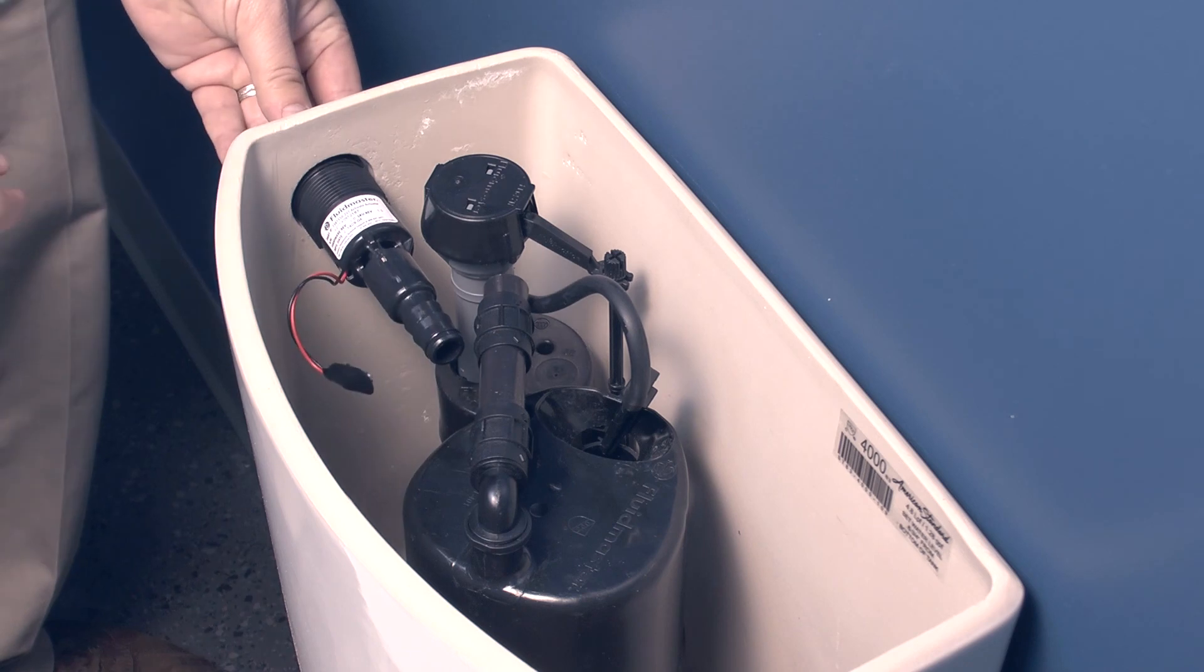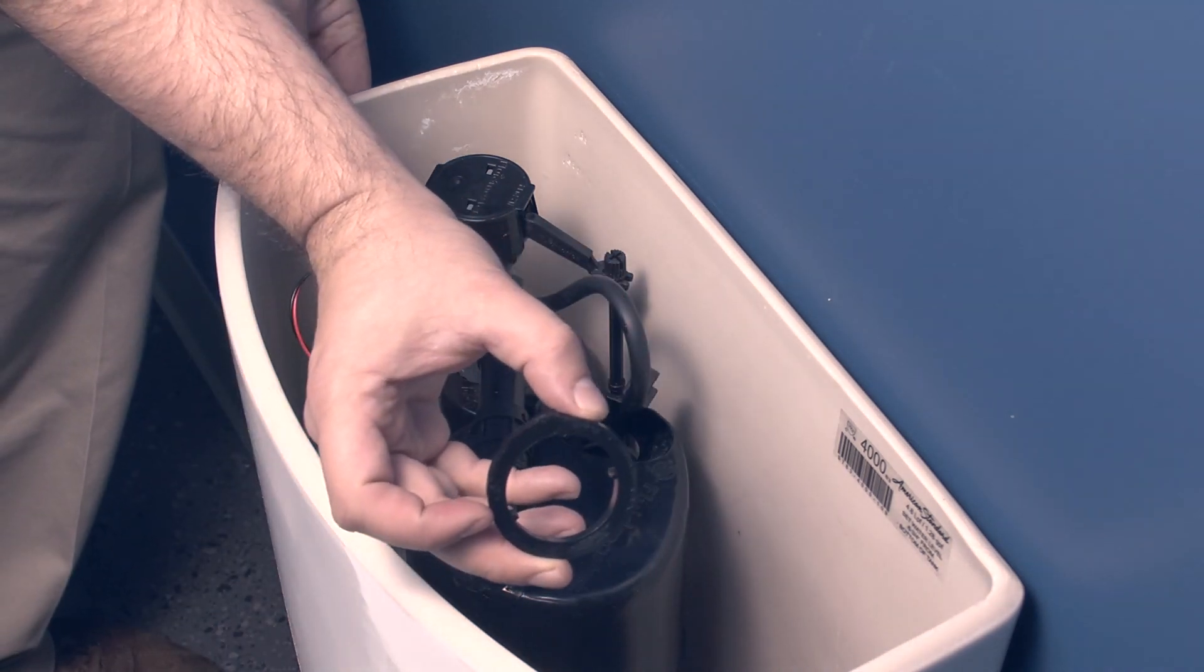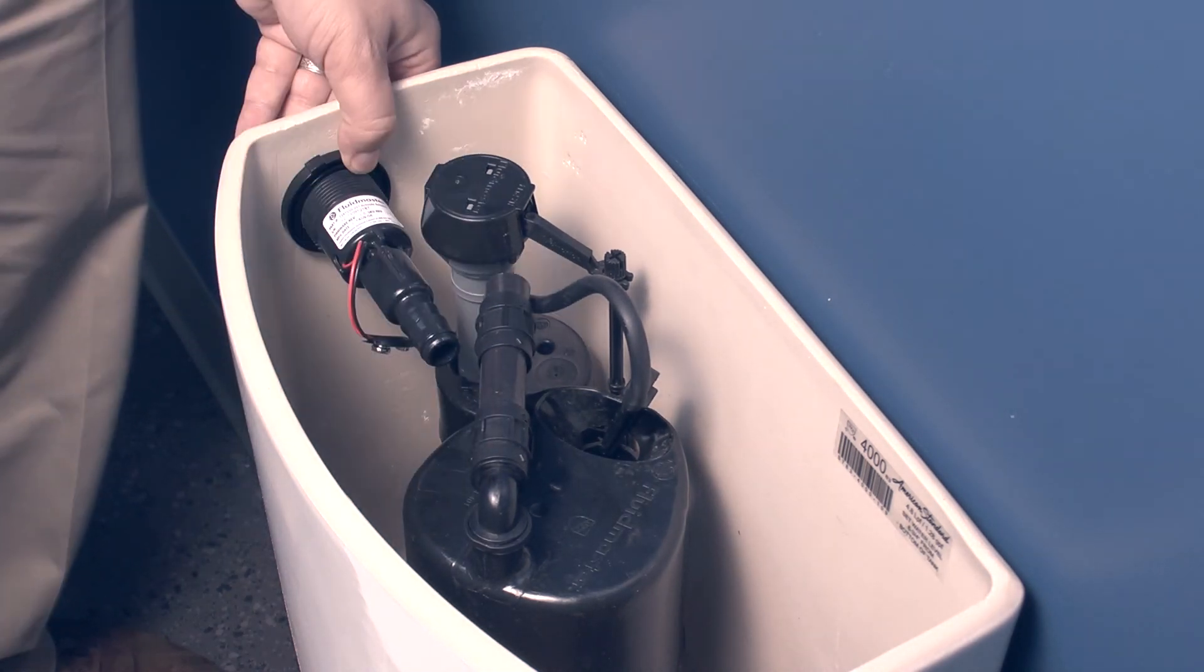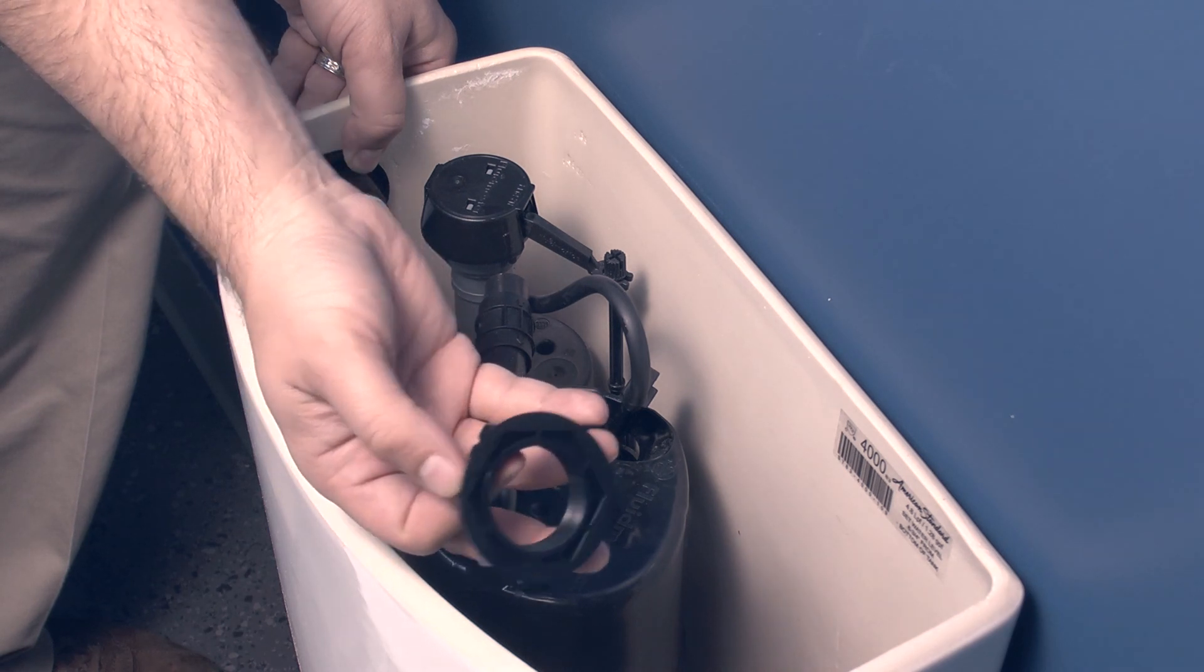Align the shim to the actuator with the square facing up. Thread the nut in a clockwise motion, hand tight.